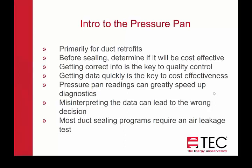Most duct sealing programs offering incentives and rebates do require an air leakage test, so you'd still need to do a duct blaster test. The pressure pan is primarily used in most cases to diagnose where the leaks are — it doesn't take the place of duct blaster tests. Although there are some programs that have used pressure pan readings alone and not an air leakage test.